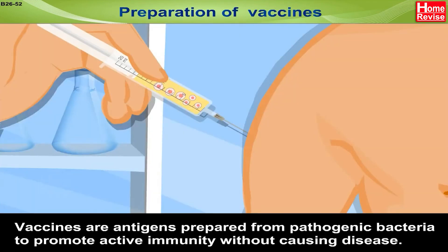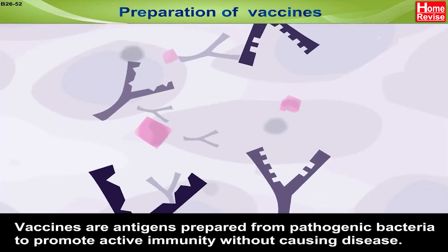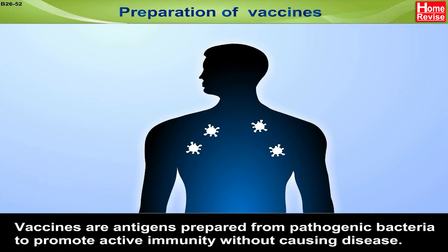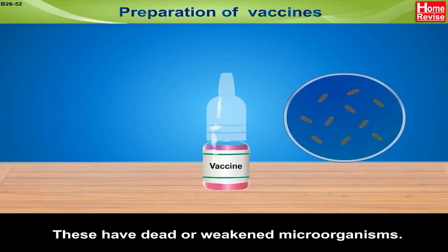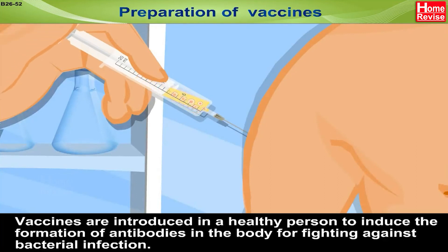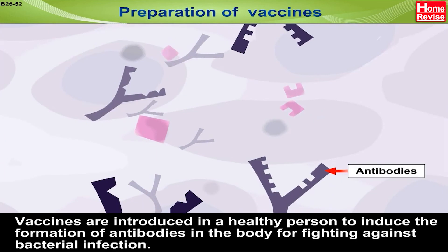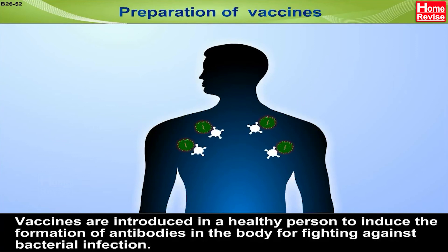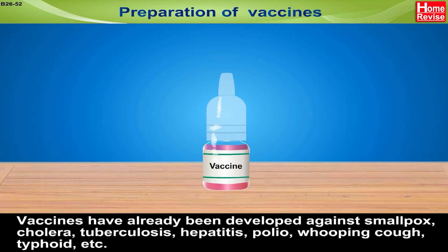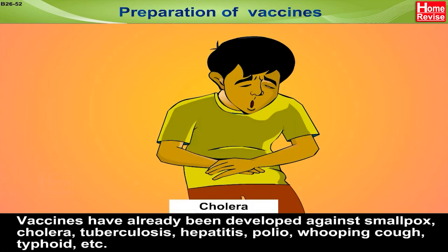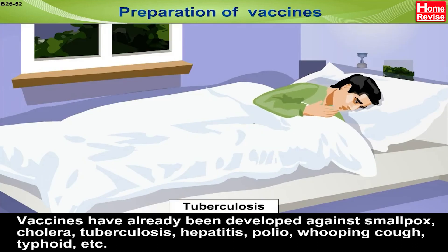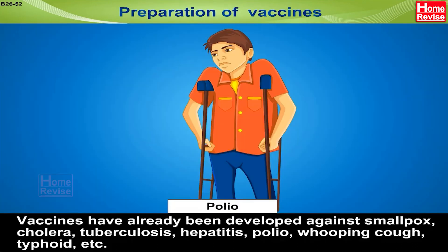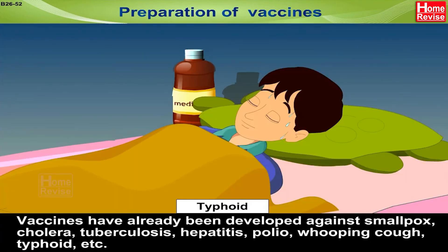Preparation of Vaccines: Vaccines are antigens prepared from pathogenic bacteria to promote active immunity without causing disease. These have dead or weakened microorganisms. Vaccines are introduced into a healthy person to induce the formation of antibodies in the body for fighting against bacterial infection. Vaccines have already been developed against smallpox, cholera, tuberculosis, hepatitis, polio, whooping cough, typhoid, etc.